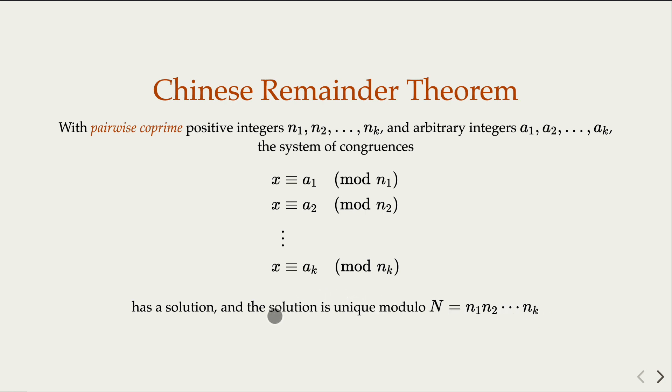If you consider all the integers, there's gonna be infinitely many, because you add multiples of big N, would also satisfy this system of congruence relations.